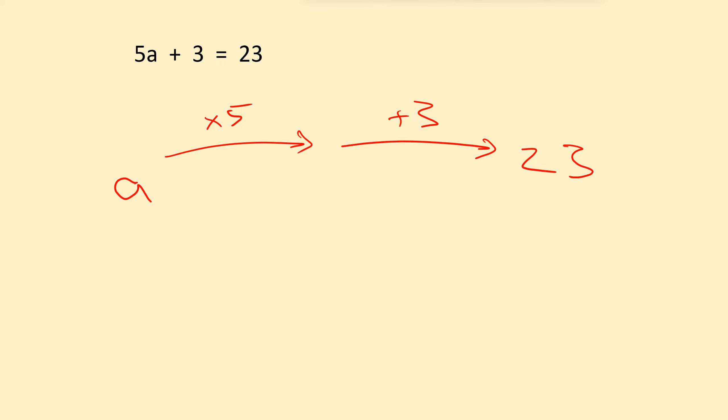Now we start the backtracking. What we do is we start at the end, so we're starting at the 23, and we're going to work backwards, step by step. So first we'll do this step, and we're going to do the inverse.